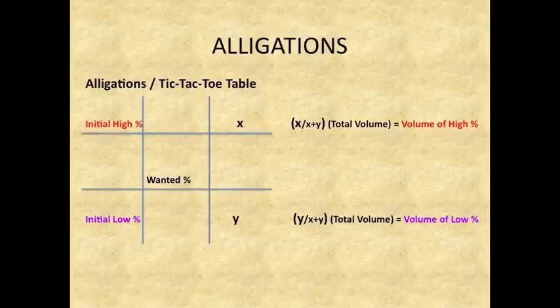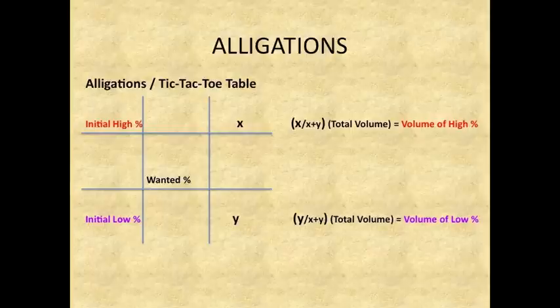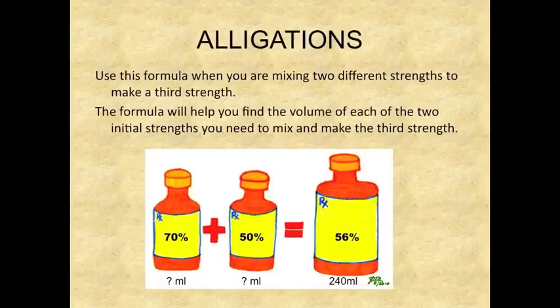Next to the X, write the formula: X over X plus Y, times total volume, equals volume of high percent. Next to the Y, write: Y over X plus Y, times total volume, equals volume of low percent. Use this formula when you are mixing two different strengths to make a third strength. It will help you find the volume of each of the two initial strengths you need.